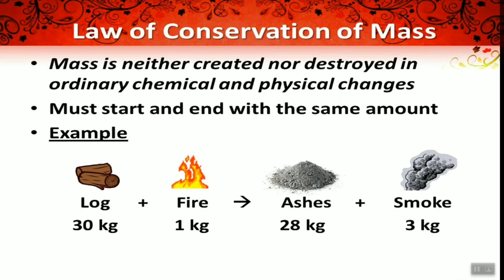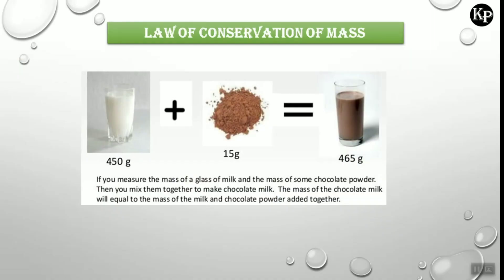Mass is neither created nor destroyed in ordinary chemical and physical changes — a reaction must start and end with the same amount. For example: logs of 30 kilograms plus fire of 1 kilogram gives ash of 28 kilograms plus exhausted smoke of 3 kilograms, so reactants total 31 kilograms and products also total 31 kilograms. Another example: if you measure the mass of a glass of milk and some chocolate powder, then mix them together to make chocolate milk, the mass of chocolate milk equals the mass of milk plus the mass of chocolate powder.